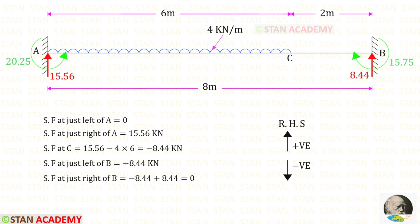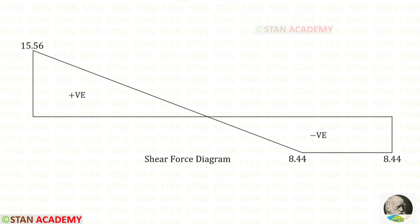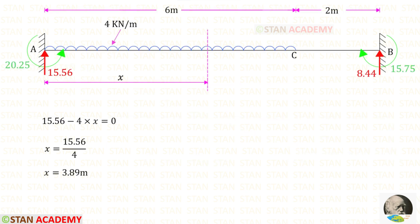Now let us find the shear force values, starting from point A, using the right-hand side rule — upwards positive, downwards negative. Looking at the shear force diagram, there is a point where the shear force becomes zero, which corresponds to the location of maximum positive bending moment. Making a section at distance x from point A and applying the condition that shear force equals zero, we find x = 3.89 meters.